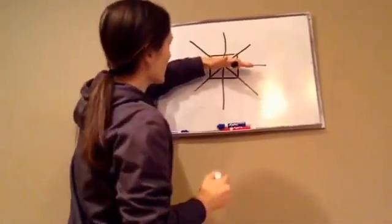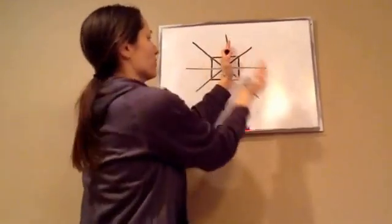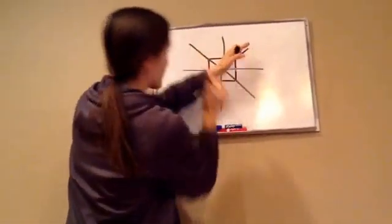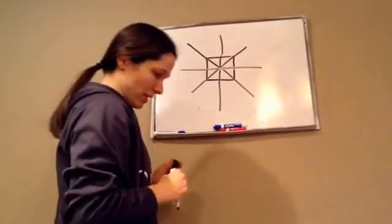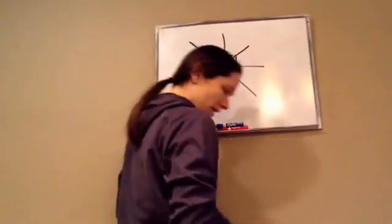So I could have done it here and it reflects. I could have done it here and it reflects. I could have done it here and it reflects. So how many lines of symmetry does this one have? Four. Four. Okay, very good.